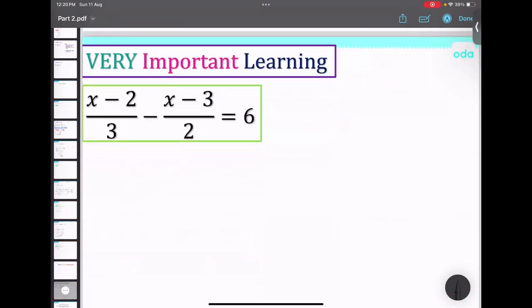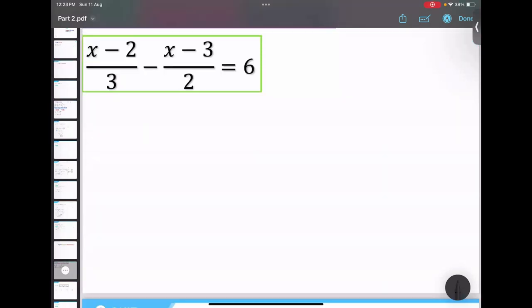Now let me see how much you are able to apply the method which I have taught. So it is not that difficult. Please do this question right now. Check your steps. So what is LCM? Again, 6. LCM is 6. So LCM is 6 over here. So we will multiply the whole equation by 6. So x minus 2 upon 3, this getting multiplied by 6. x minus 3 upon 2 getting multiplied by 6 equals to 6 multiplied by 6.